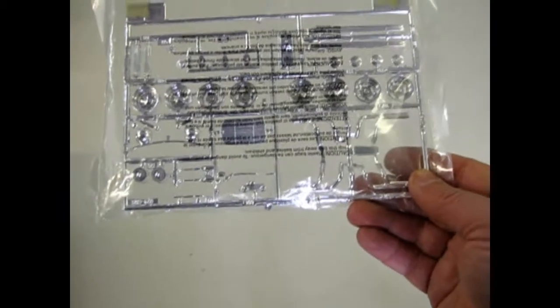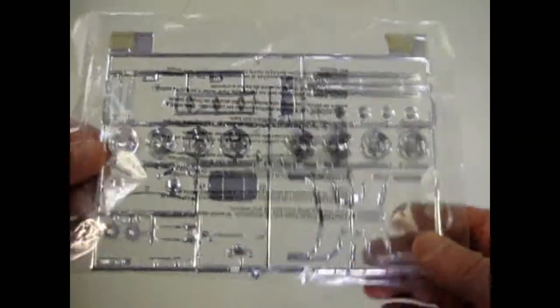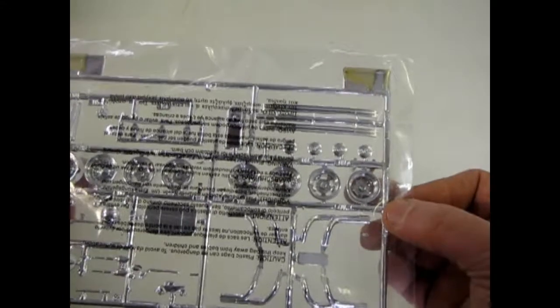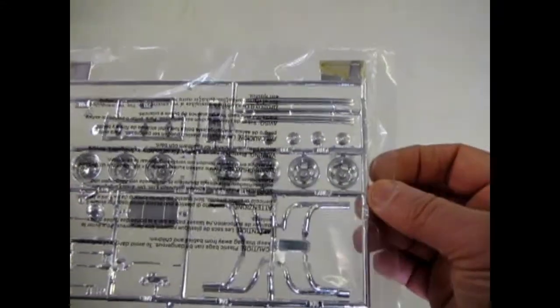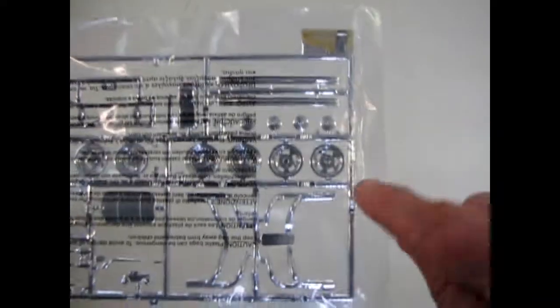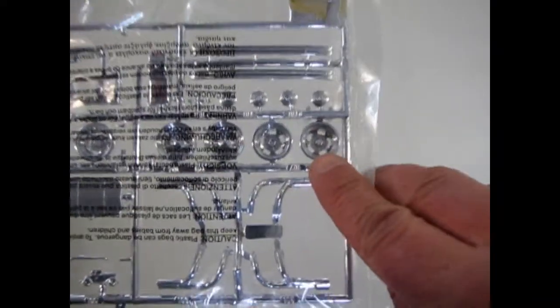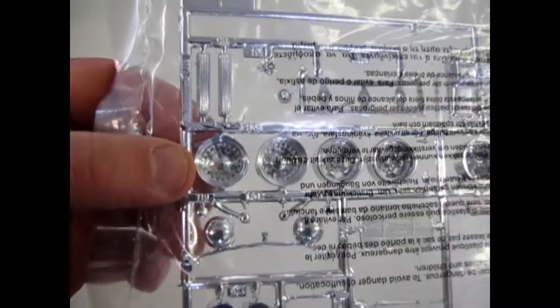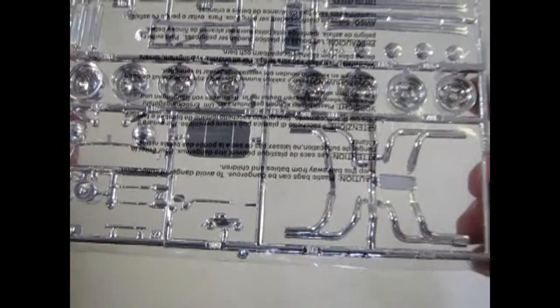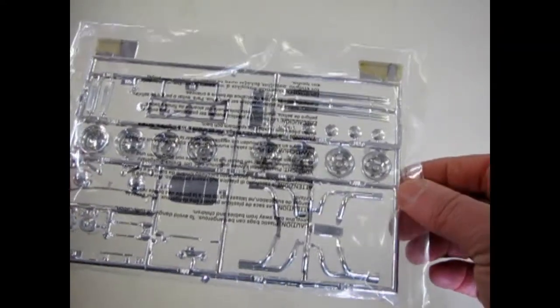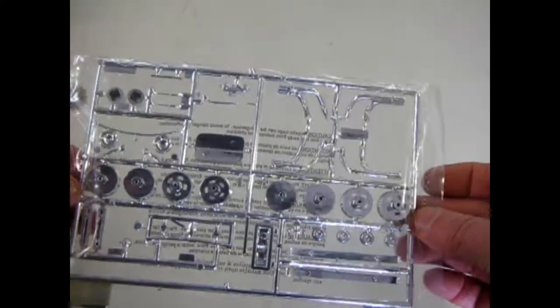Now this kit had a few reissues. I believe it came out in the 70s and it shares some body panels with the 32 Ford Victoria, which is in another one of our upcoming reviews. These open slot mag wheels came out in the 70s. And these other ones with all the little dots and holes, they came out in a kit release from the 1980s. I've built both versions. And this kit goes together really, really nicely.